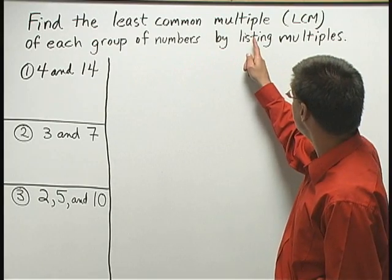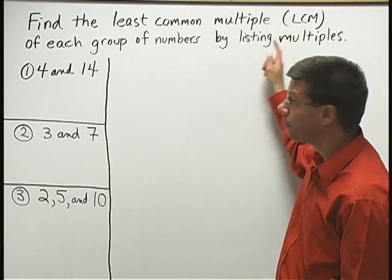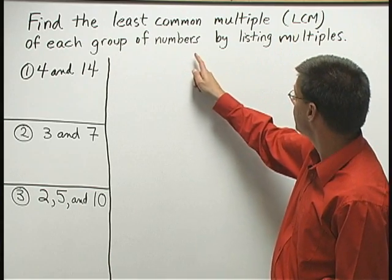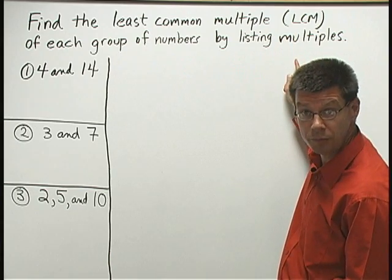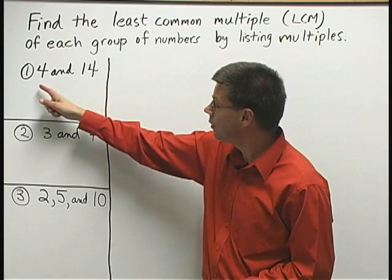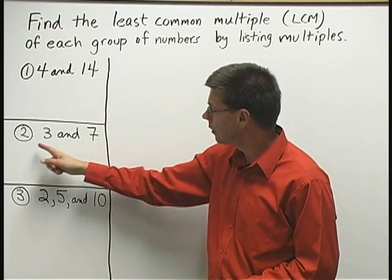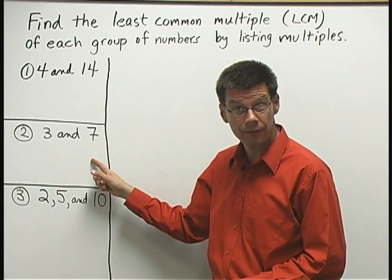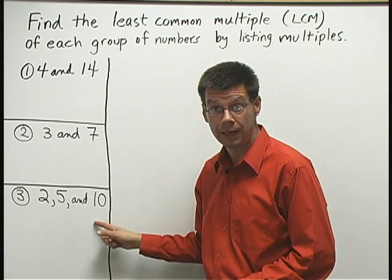Find the least common multiple, or LCM, of each group of numbers by listing multiples. Number 1: 4 and 14. Number 2: 3 and 7. Number 3: 2, 5, and 10.